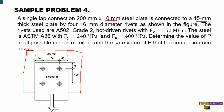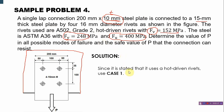The given values are: 10mm thickness, allowable shear stress of 152 MPa, F_y = 248 MPa, and F_u = 400 MPa. Since hot-driven rivets are used, we add 1.6mm to the rivet diameter: 16 + 1.6 = 17.6mm, which is the diameter of the hole.